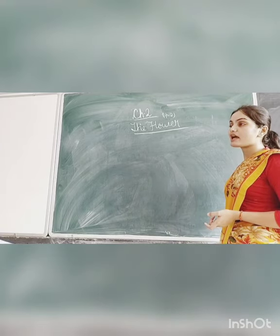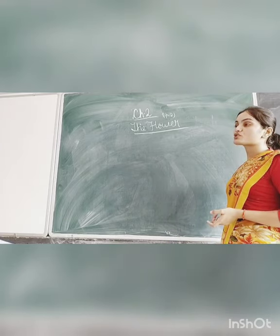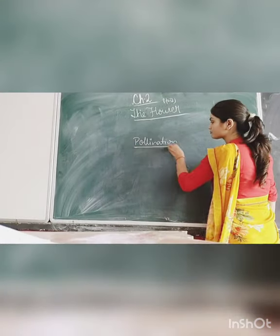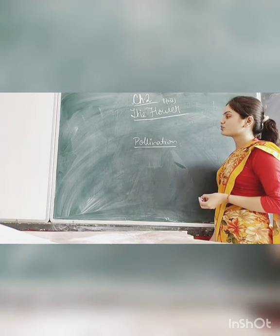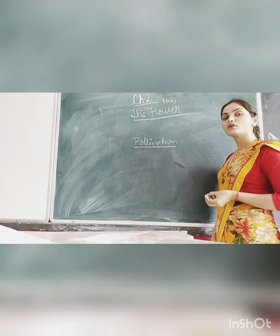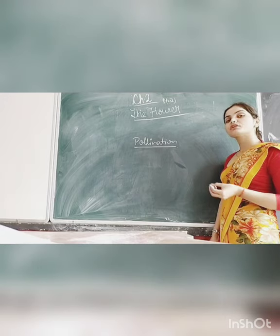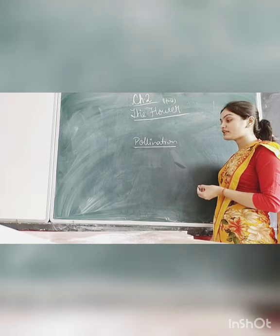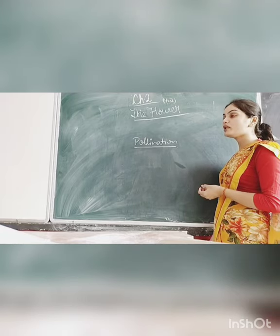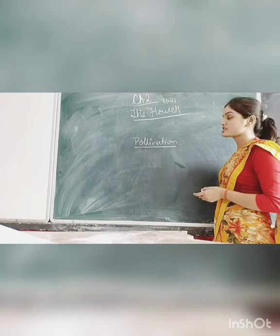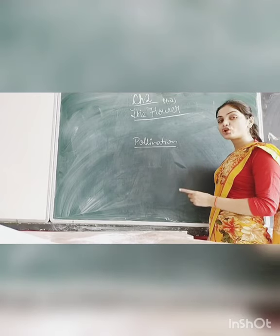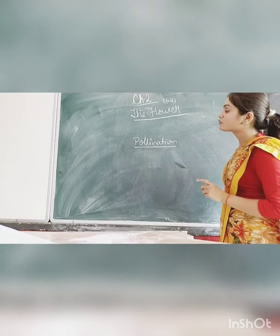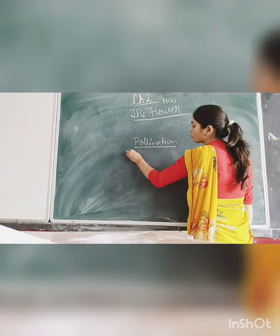What we had started in our last class is the process of pollination. Pollination is the transfer of pollen grains from the male part of the flower to the female part of the flower. They get transferred from the anther of the male to the stigma. Today what we are going to study is the agents of pollination.